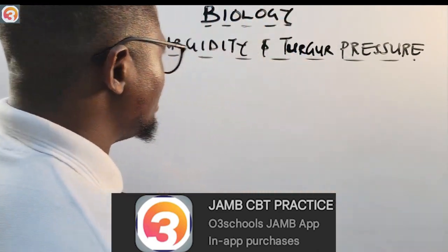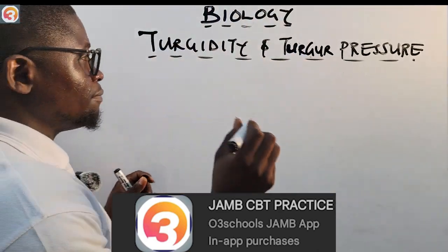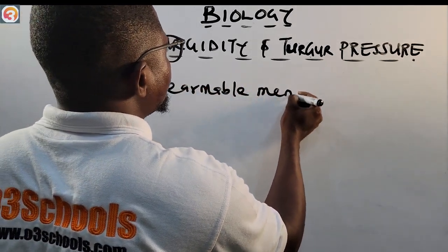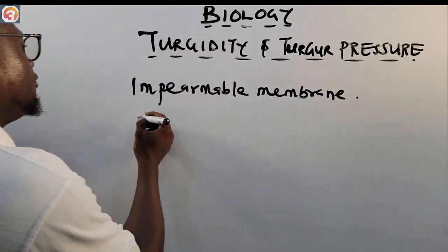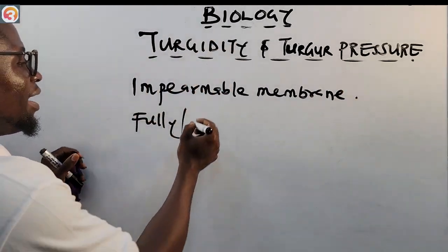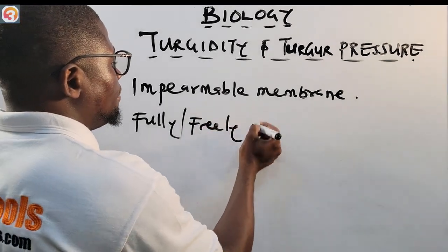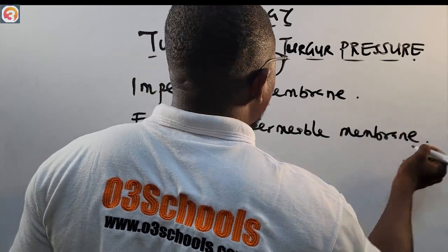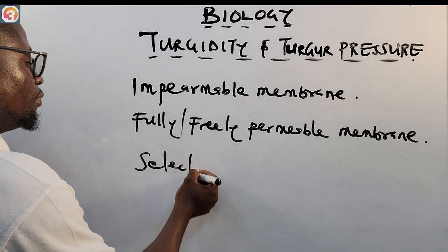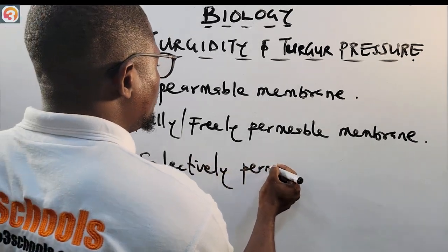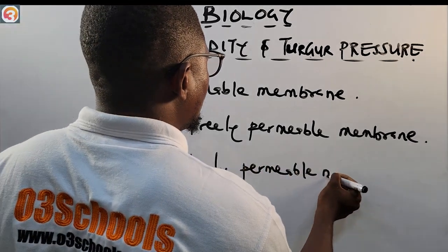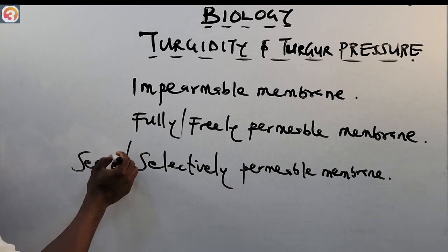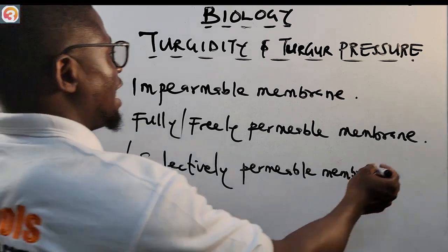Before we talk about turgidity and turgor pressure, let's talk about the types of membranes we have. We have three types of membranes: impermeable membrane, fully or freely permeable membrane, and selectively permeable membrane.